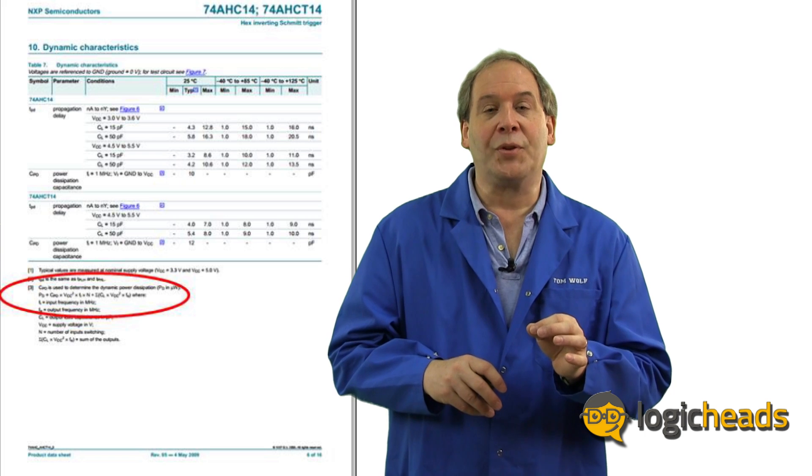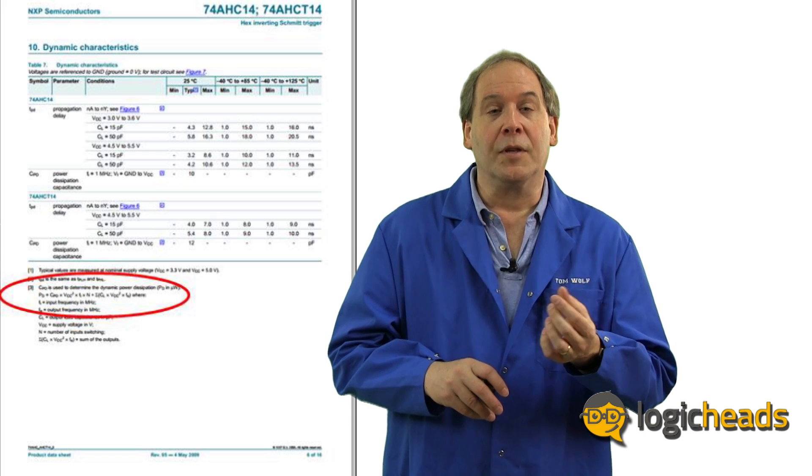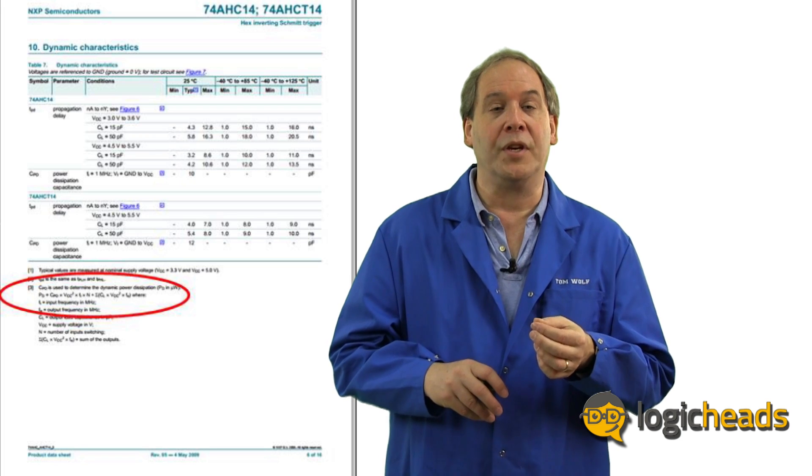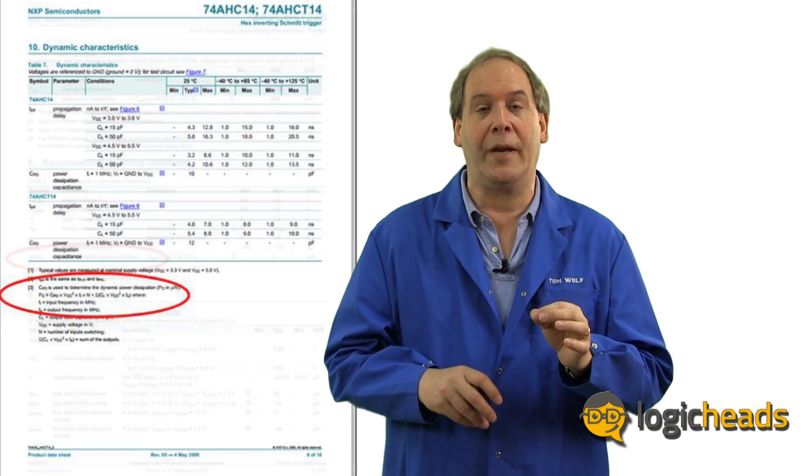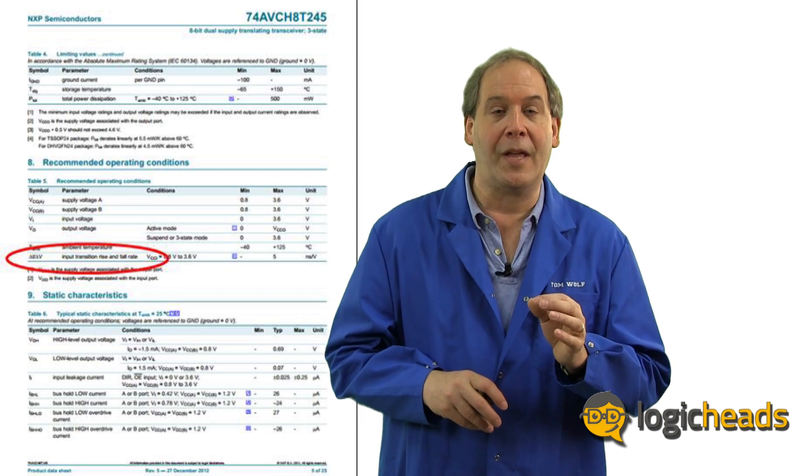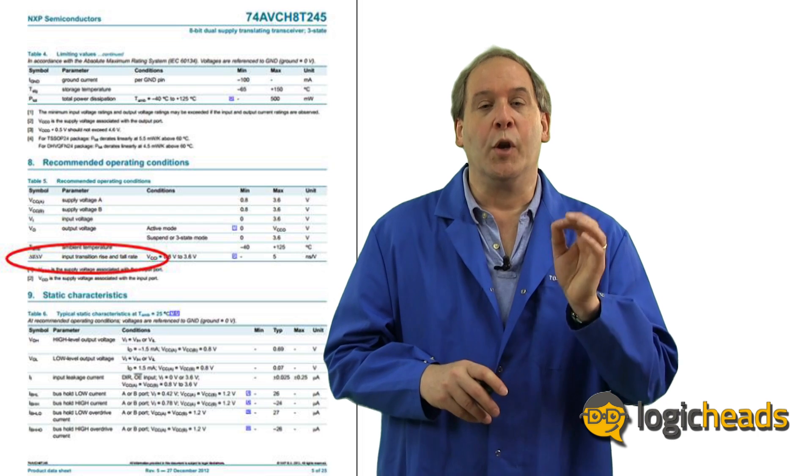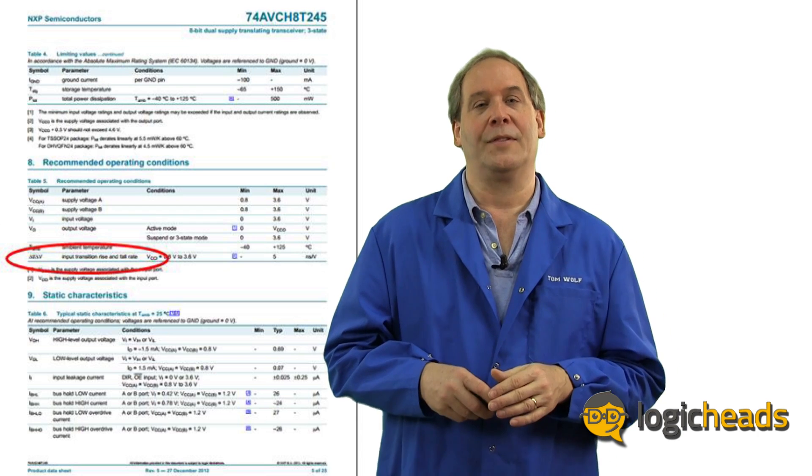Did you know that some parts actually have a lower speed limit? In this case, you will find that there is a note in the datasheet, typically under the recommended operating conditions, that lists minimum delta T, delta V input transition, rise and fall rates. What this means is, don't try to operate slower than this value.